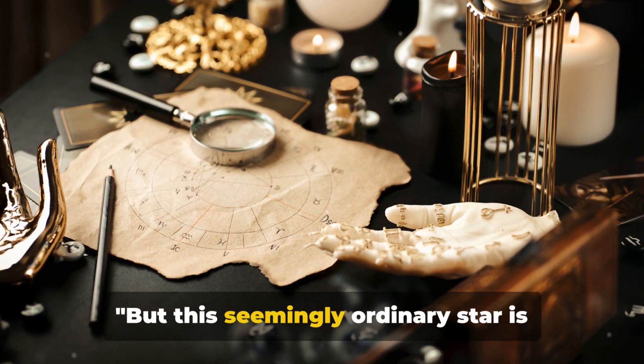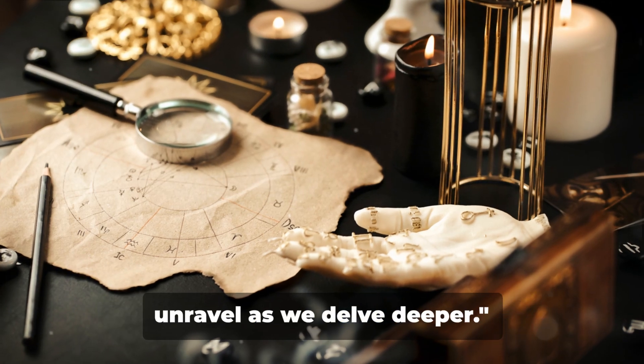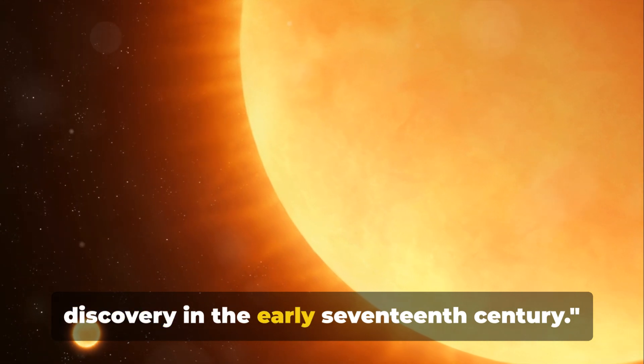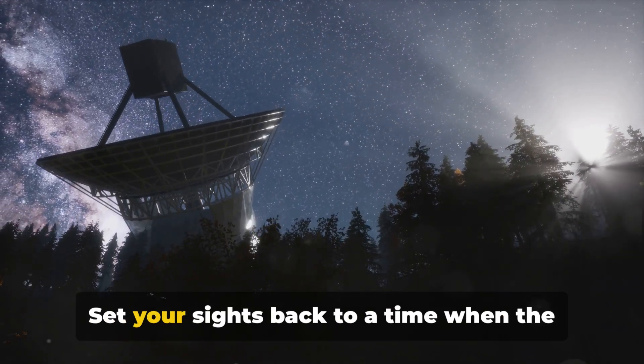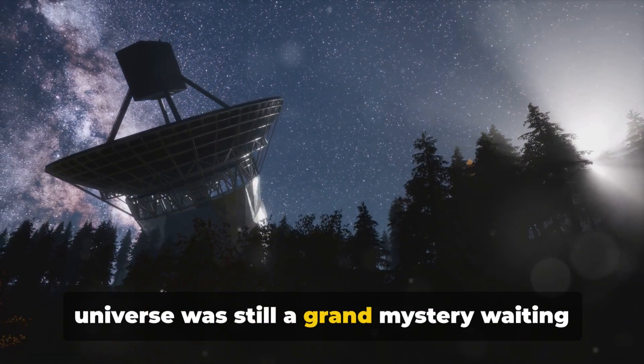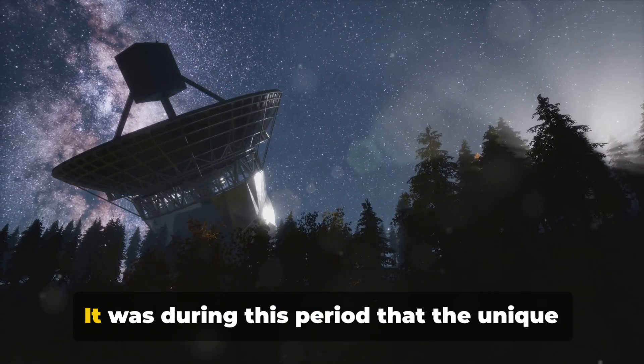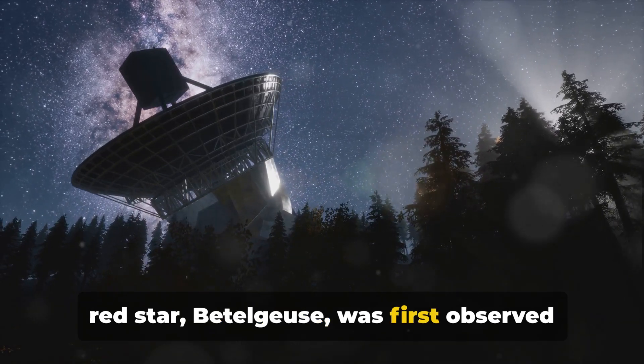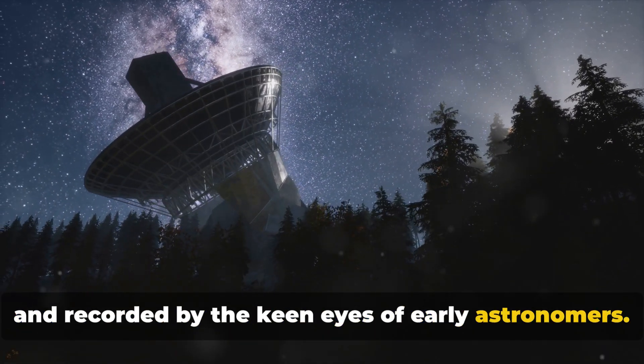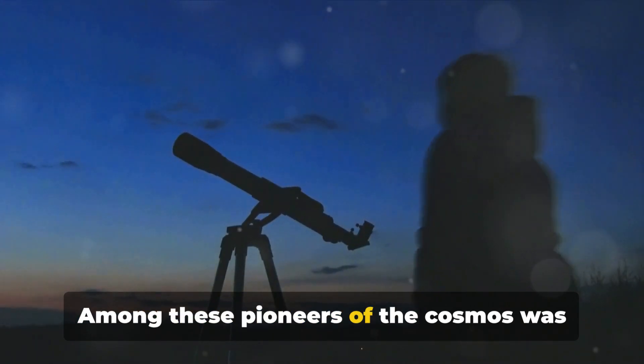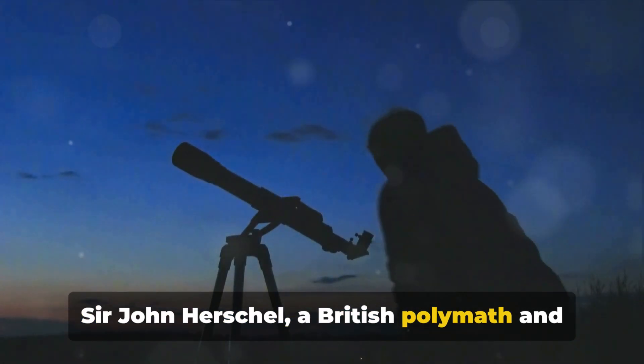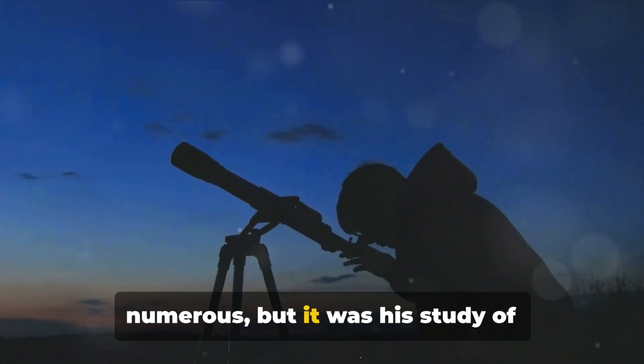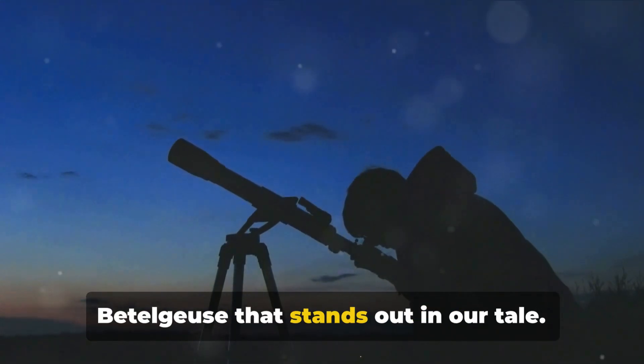But this seemingly ordinary star is shrouded in dark mysteries that will unravel as we delve deeper. The story of Betelgeuse begins with its discovery in the early 17th century. Set your sights back to a time when the universe was still a grand mystery waiting to be unraveled. It was during this period that the unique red star, Betelgeuse, was first observed and recorded by the keen eyes of early astronomers. Among these pioneers of the cosmos was Sir John Herschel, a British polymath and a titan in the field of astronomy. Herschel's contributions to science were numerous, but it was his study of Betelgeuse that stands out in our tale.